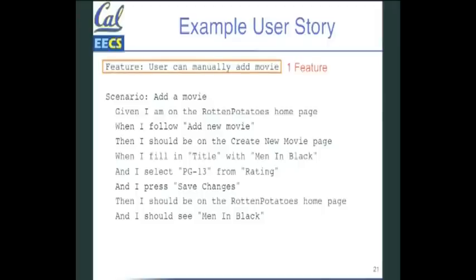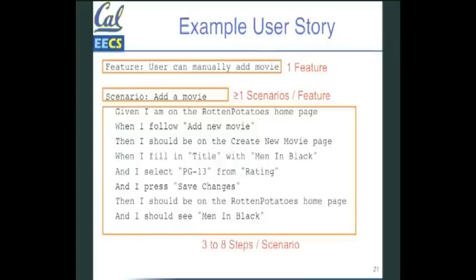You see the keyword scenario. In Cucumber, there can be one or more scenarios. Typically there's several scenarios. We'll just do one example here. One scenario per feature. And then what's below that are called steps. So each one of those lines is the step. I guess in this case there are eight lines.